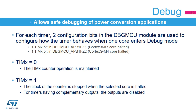In standby mode, the timer is powered down and must be completely reinitialized when exiting from this mode. The timer state in debug mode can be configured with two configuration bits per timer, one for the Cortex-A7 and one for the Cortex-M4. If the debug bit is reset, the timer clock is maintained during a breakpoint. If the debug bit is set, the timer's counter is stopped as soon as the core is halted.